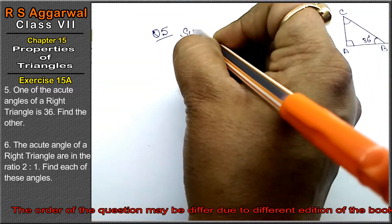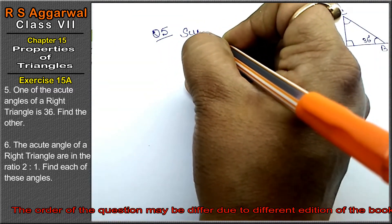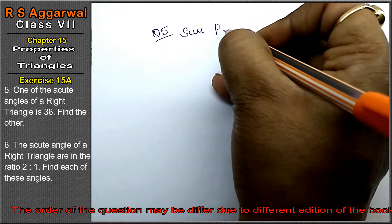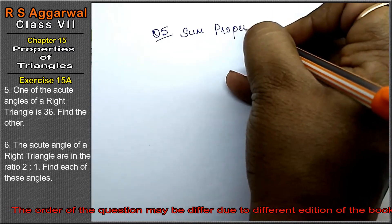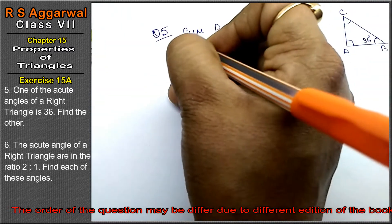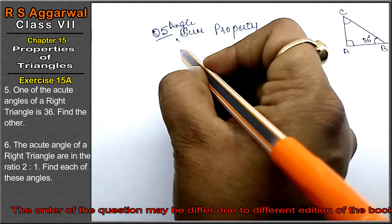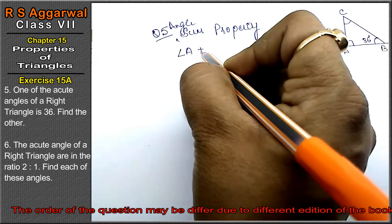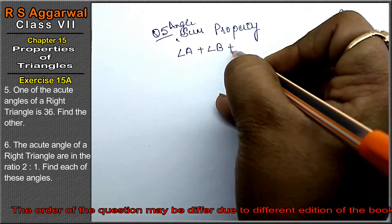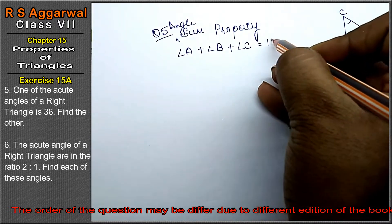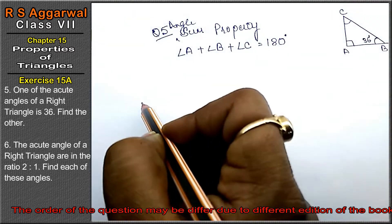We will use the angle sum property. Angle A plus angle B plus angle C equals 180 degrees. Right, friends?